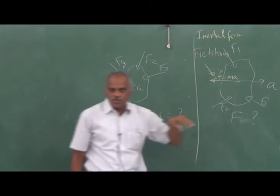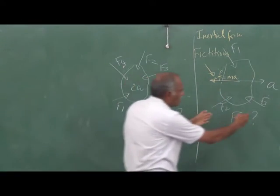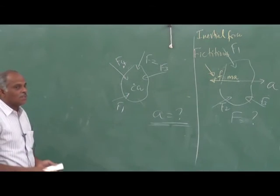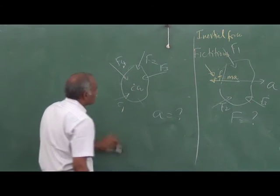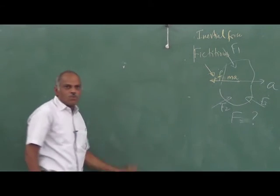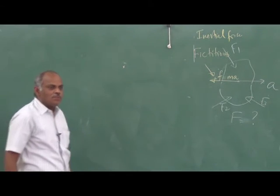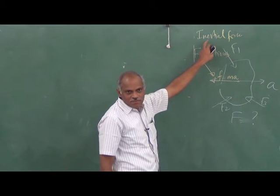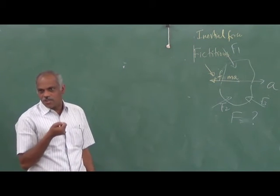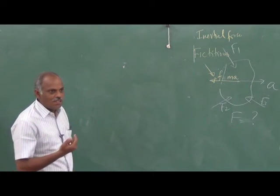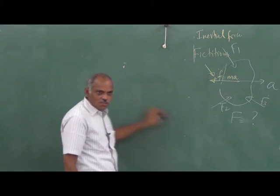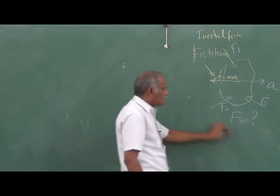We are going to introduce the inertial force to solve this type of problem — where we know the acceleration of linkages and want to find the forces acting. For objects rotating in a circle, we experience the inertial force as a reaction, and we give it the name centrifugal force. Centripetal force is the actual force applied on the body to produce the acceleration; centrifugal is the inertial force, also called pseudo force by physicists.